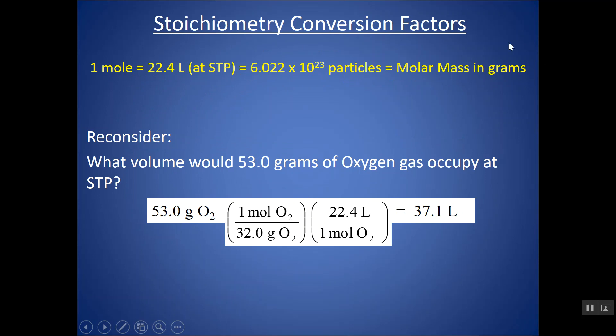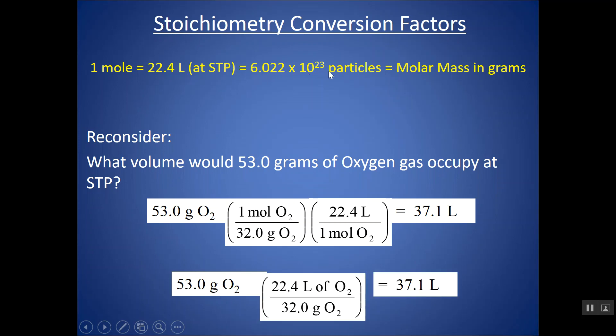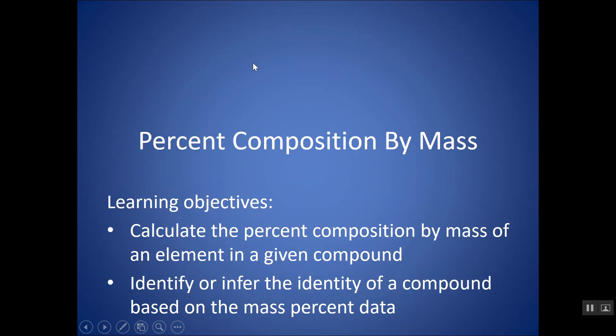So these are essentially all the conversion factors you need to memorize. A mole equals 22.4 liters. It also equals 6.02 times 10 to the 23rd particles. Maybe that's molecules, maybe it's atoms, depending what the substance is. And it's also equal to the molar mass in grams. So notice they all tie into one mole. And that's why I say when in doubt, mole it out. You're likely going to have to pass through the mole before going into any of the other conversion factors.